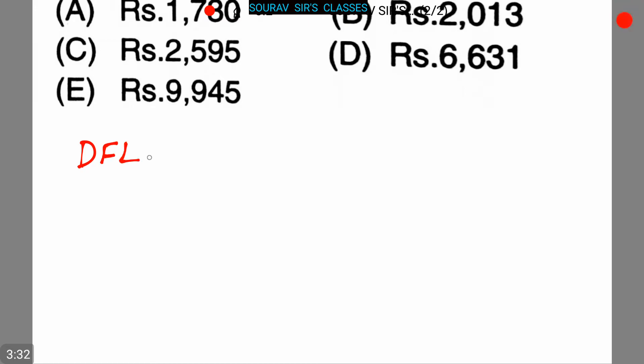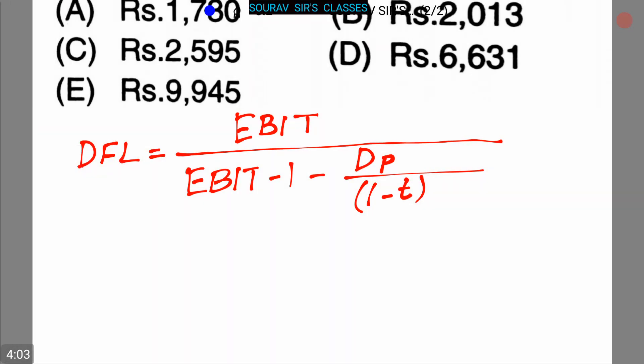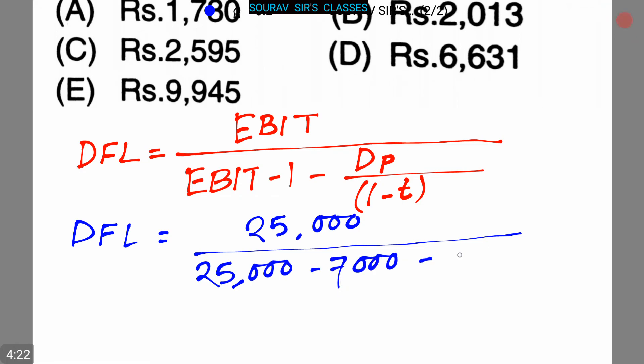DFL is equals to EBIT divided by EBIT minus I minus DP divided by 1 minus T. So 1.61 equals to 25,000 divided by 25,000 minus 7,000 minus DP divided by 1 minus 0.30.